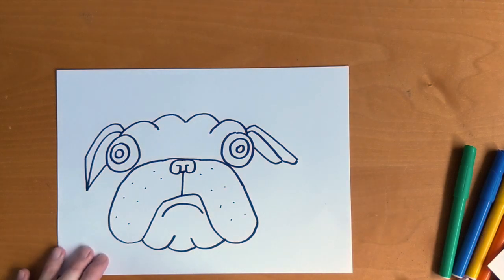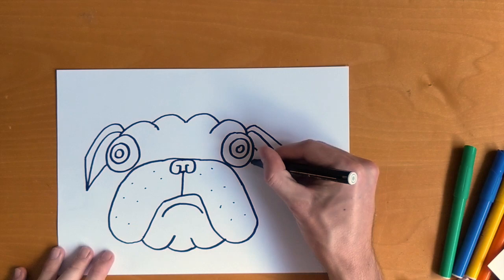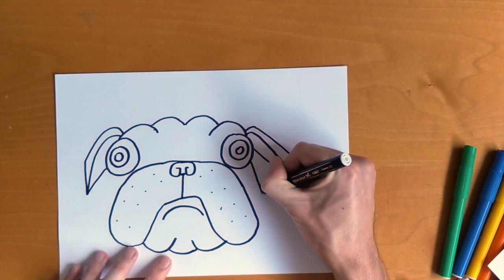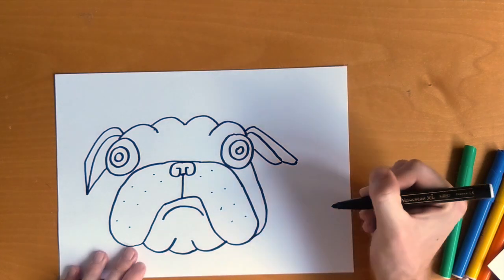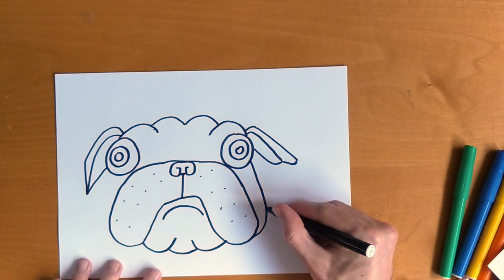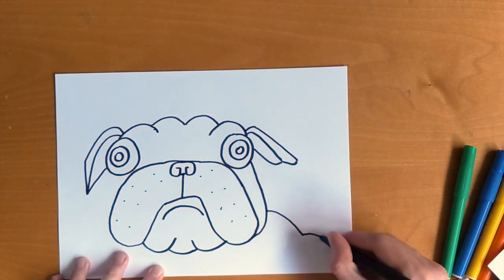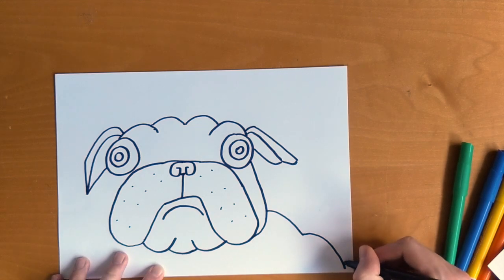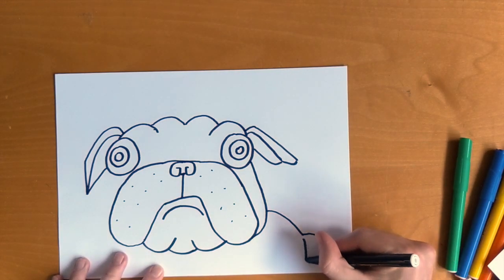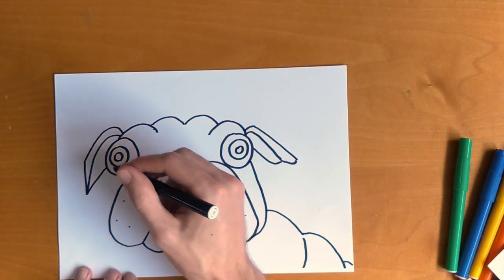Now we need to do his side of his face. So from the side of Pig the Pug's eye we're going to go down the page and curve into his mouth just like that. Then we can do the side of his body which is a big curve, another big curve, and a final curved line. You can even do a little crease to show how big he is. Too much food for you, Pig the Pug.